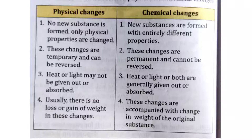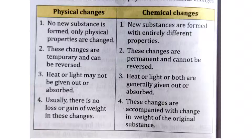For example, the drying of a cloth is a physical change, and the ripening of a fruit is a chemical change. There are certain characters by which we can easily differentiate between a physical change and a chemical change.